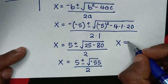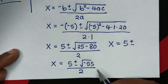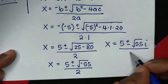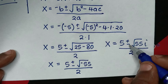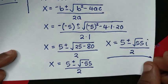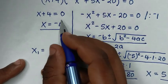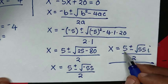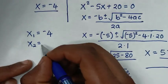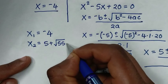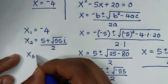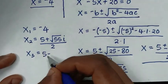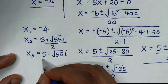Then it will be x equals 5 plus or minus the square root of negative 55. The square root of negative 1 is i, so it will be the square root of 55 times i, over 2. We have two solutions because of plus or minus, and these are complex solutions. The second value of x is (5 plus square root of 55 times i) over 2, and the third value of x is (5 minus square root of 55 times i) over 2.